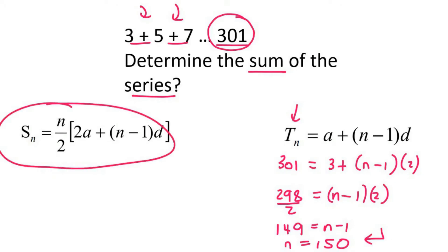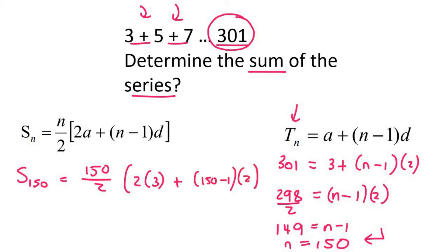Now we can come back to this formula. And so we can say s of 150 terms is 150 over 2, 2 times a, which is 3, plus 150 minus 1. And then our common difference is 2.